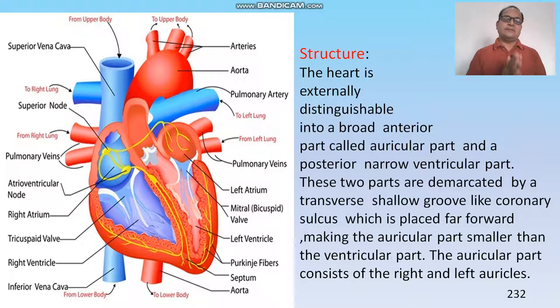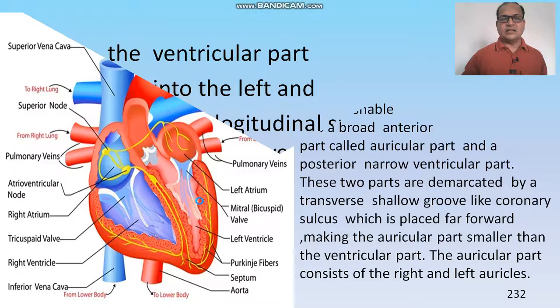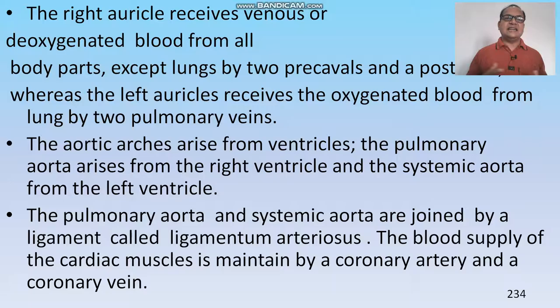The heart has four chambers: two auricles and two ventricles. The ventricles are separated by the interventricular septum, and the auricles are separated by the inter-auricular septum. Impure blood is brought by the vena cava and drops into the right auricle, from the auricle to the right ventricle, from the ventricle to the lungs for purification, and then to the left auricle. From the left auricle to the left ventricle, and from the left ventricle through the systemic arch to the body parts. The heartbeat rate of the rat is 350 to 450 beats per minute.